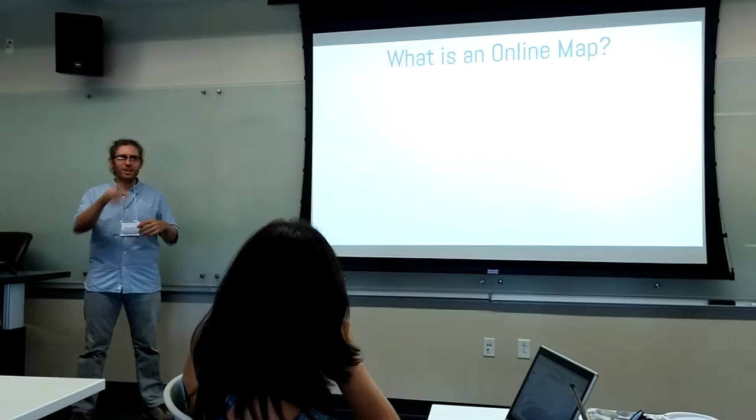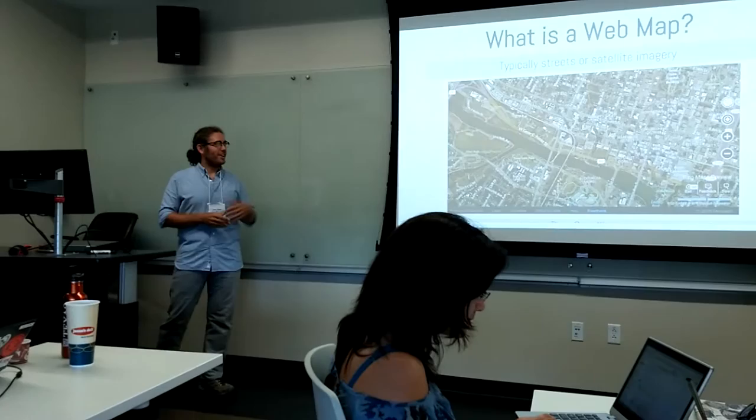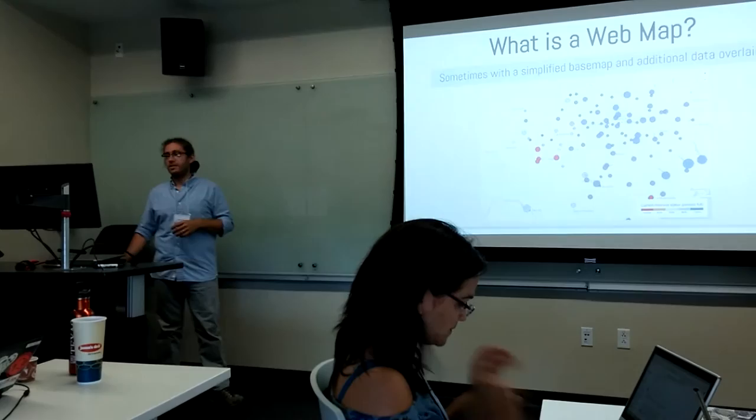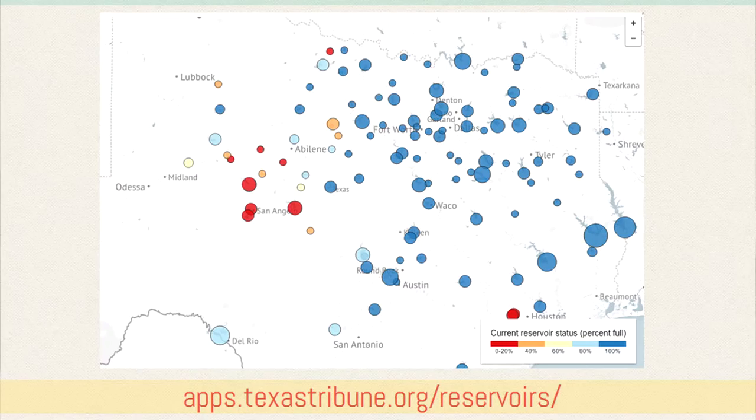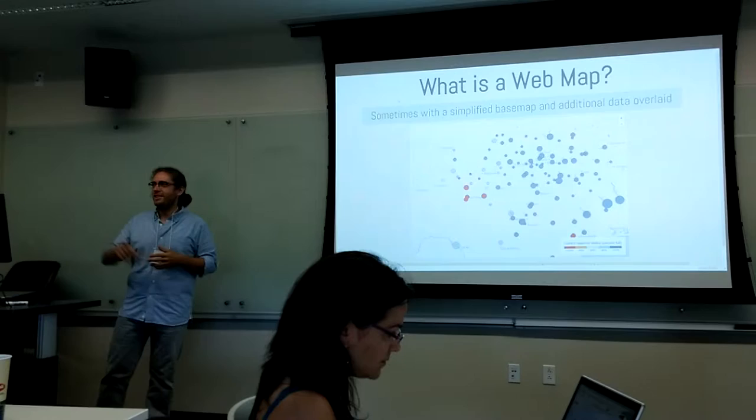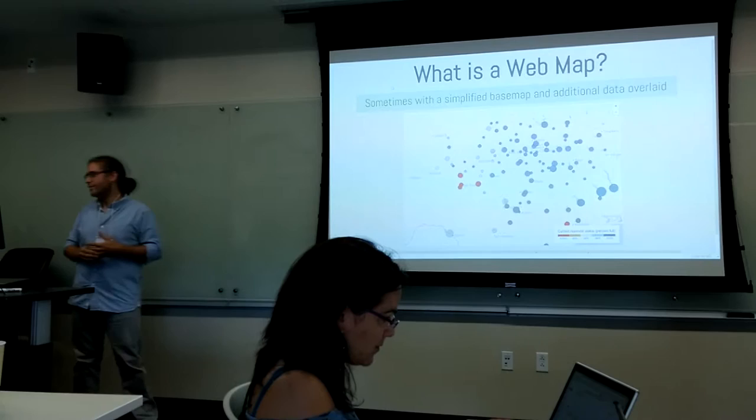So what is a web map? I'm sure everybody's used Google Maps for directions at least. A web map typically has streets or satellite imagery — like Bing imagery with streets overlaid. Sometimes you've got a simplified background map called a base map with data on top. Here's one from the Texas Tribune that shows current reservoir levels in Texas — Andy actually made the app that provides the data for this news application.